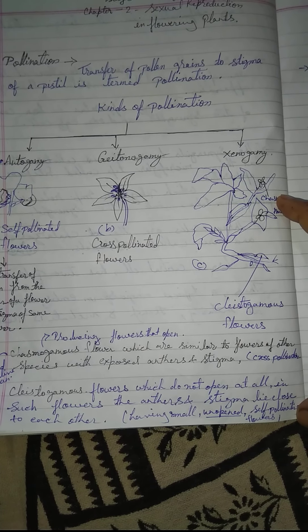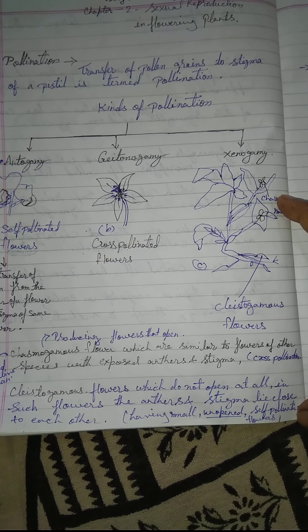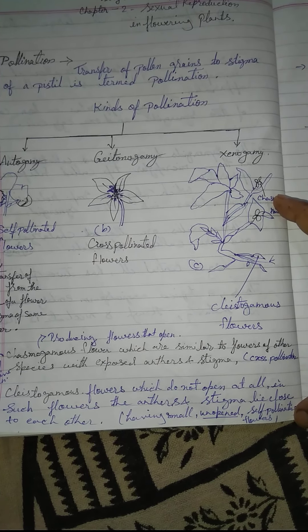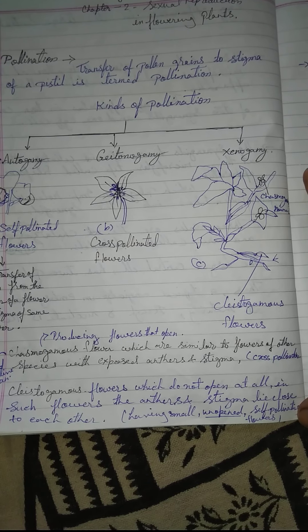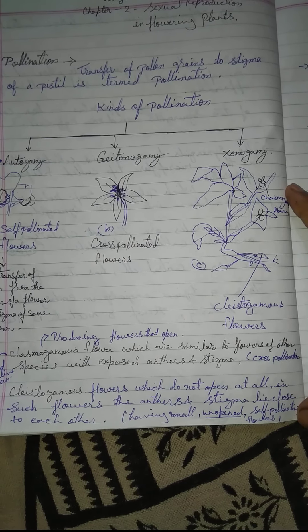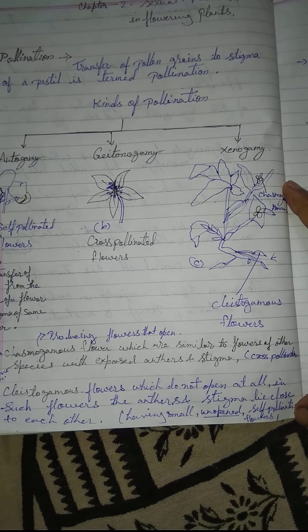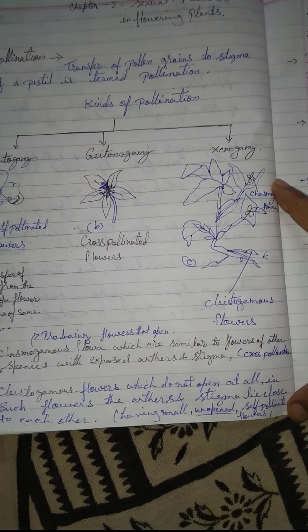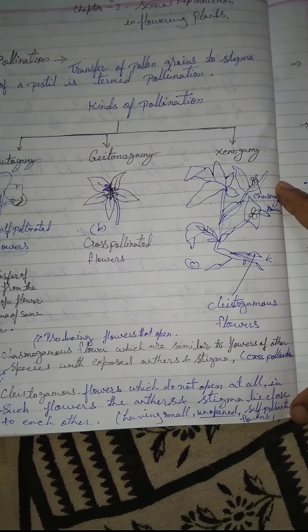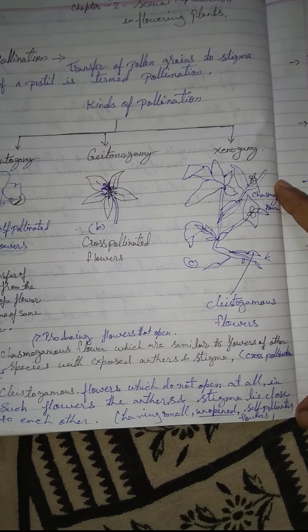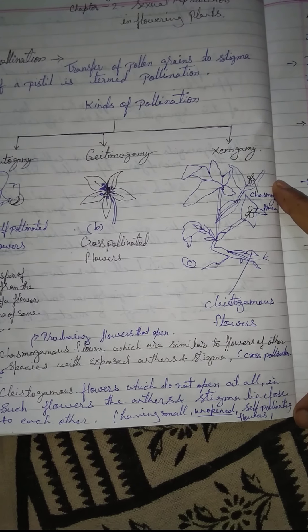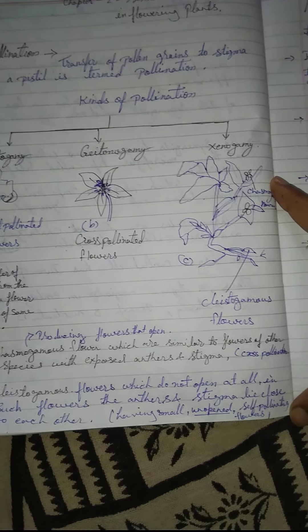Cleistogamous flowers do not open at all. In such flowers, the anther and stigma lie close to each other. These are small, unopened, self-pollinating flowers.